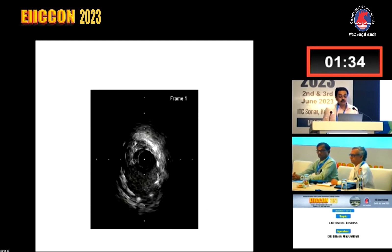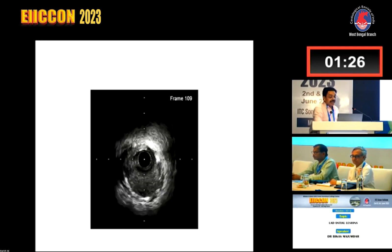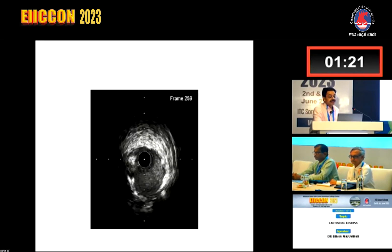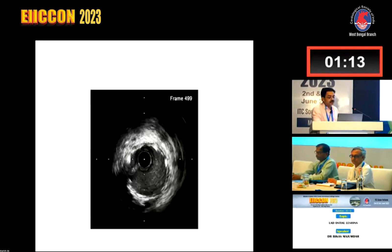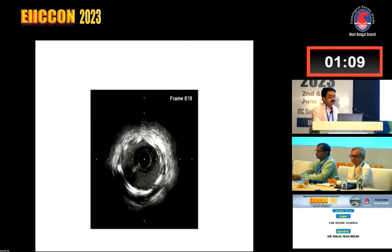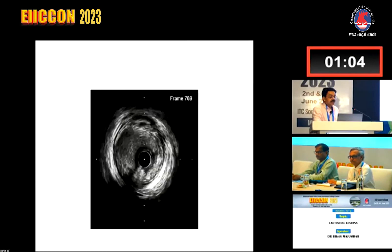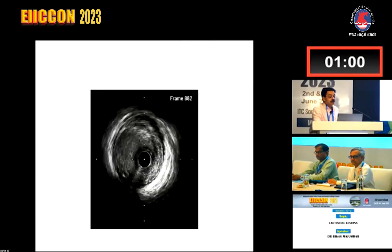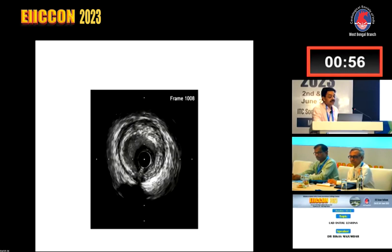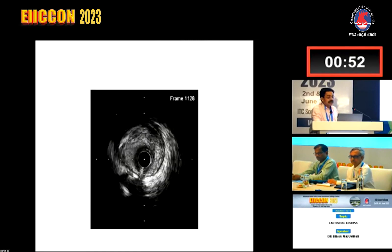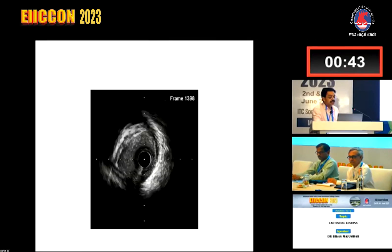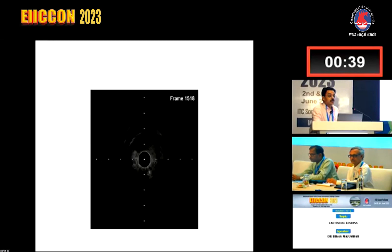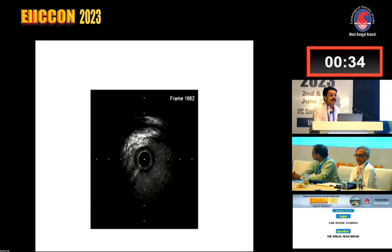In this particular case, I performed an IVUS to assess the area at the osteo-proximal LAD and the size of the left main. Starting from the distal stent placed a few weeks ago after the infarct, you can see that proximal to the stent edge there is significant disease in the osteo-proximal LAD. The plaque is pretty tight. Coming near the bifurcation at the circumflex ostium and into the left main, you can see in the 9 o'clock to 12 o'clock position there is plaque in the left main as well.